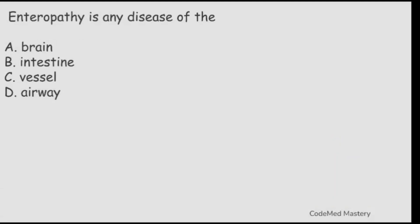Next question: enteropathy is any disease of the? Option A: brain. Option B: intestine. Option C: vessel. Option D: airway. The right answer is option B, intestine, because the term 'entero' means intestine and 'pathy' means disease, so enteropathy is disease of the intestine.